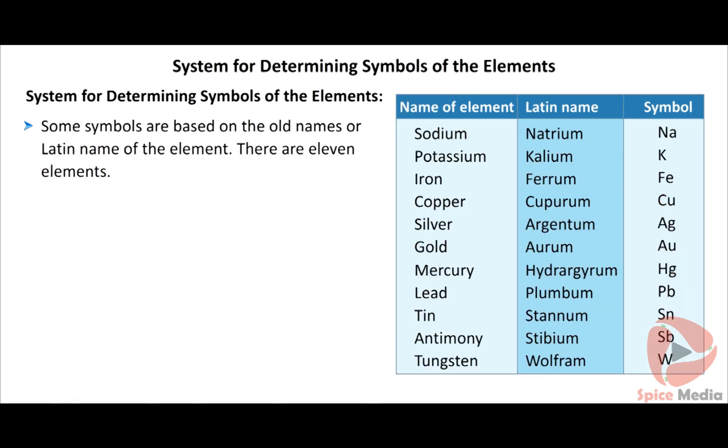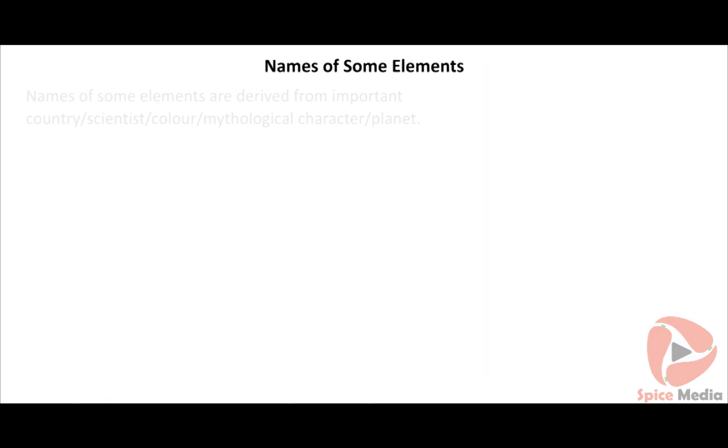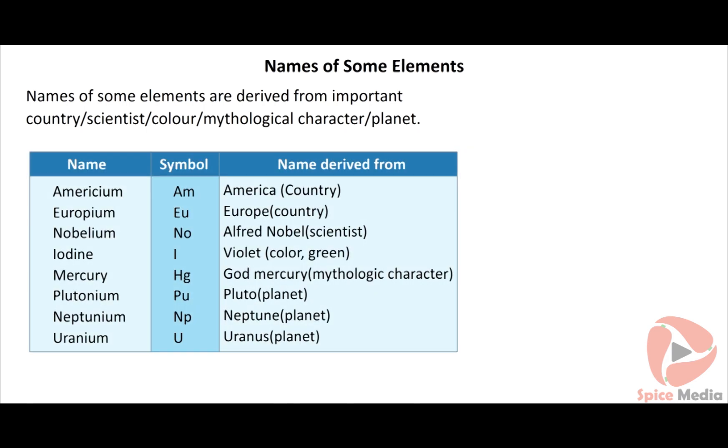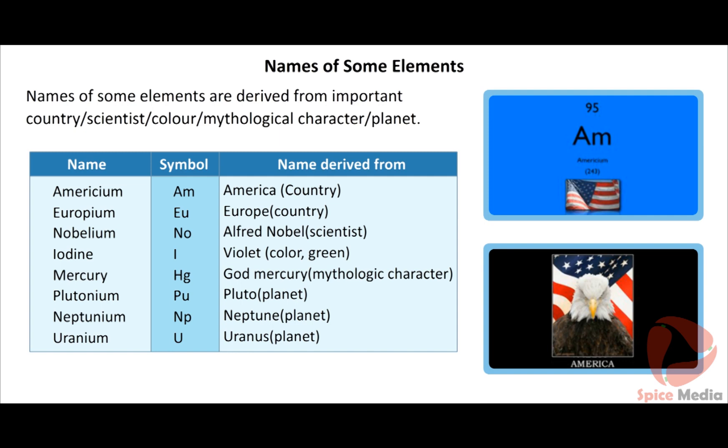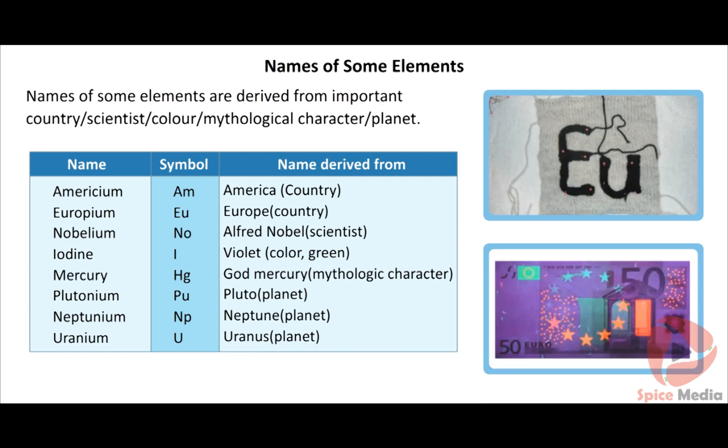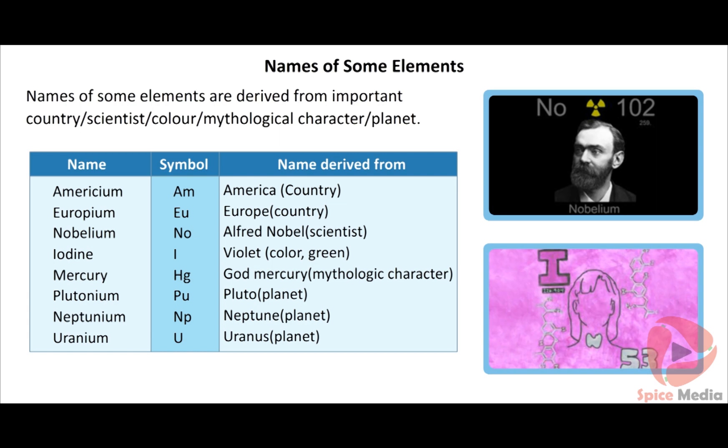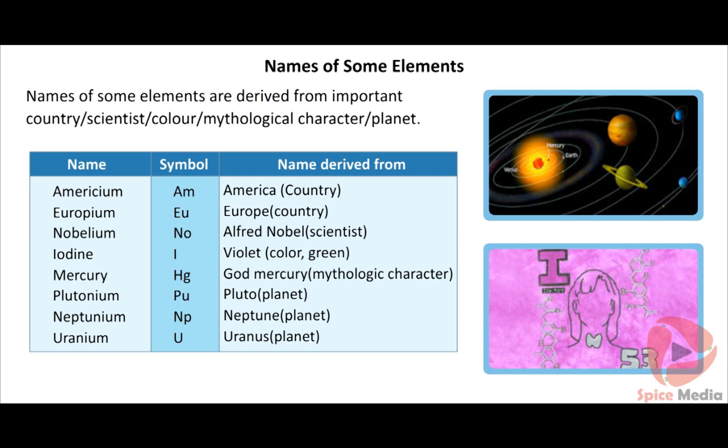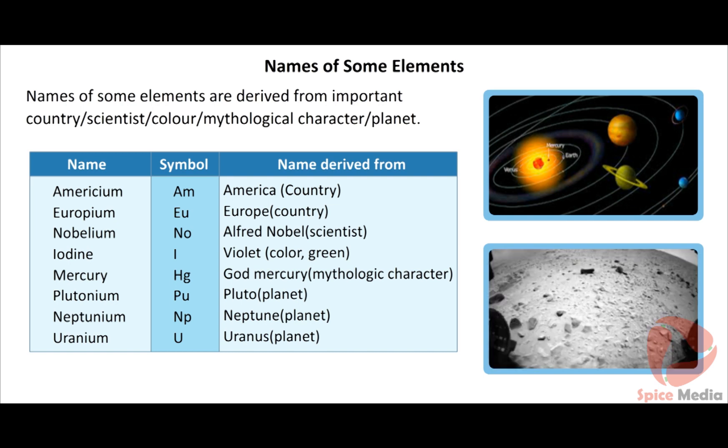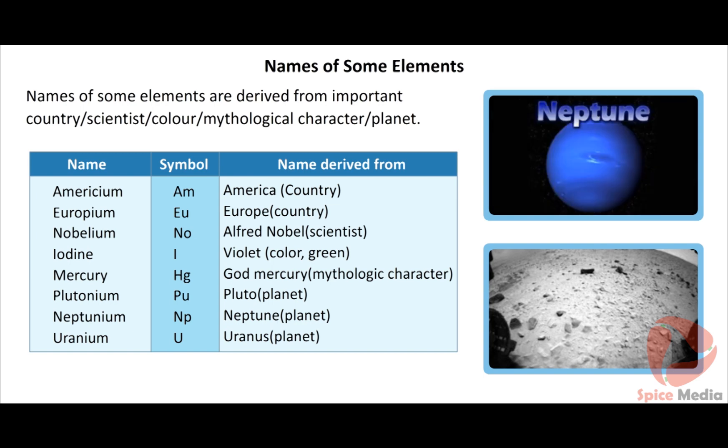There are 11 elements. Names of some elements are derived from important country, scientist, color, mythological character or planets. Examples: Americium (AM) from America, Europium (EU) from Europe, Nobelium (NO) from Alfred Nobel, Iodine (I) from violet color in Greek, Mercury (HG) from God Mercury, Plutonium (PU) from Pluto planet, Neptunium (NP) from Neptune planet, Uranium (U) from Uranus planet.